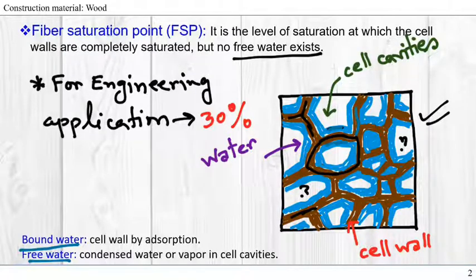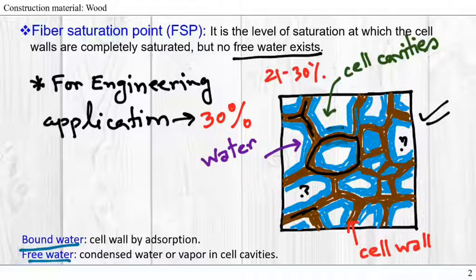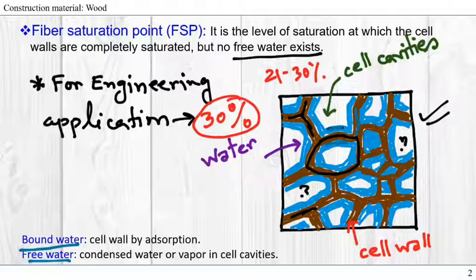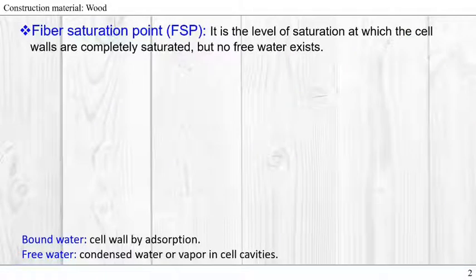FSP varies from one species to another, but within one species the FSP can vary between 21 to 30 percent. For engineering applications in general, we assume that the FSP is 30 percent unless it is provided as 27 percent or 28 percent.